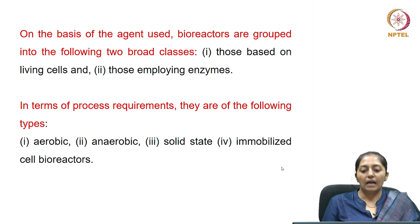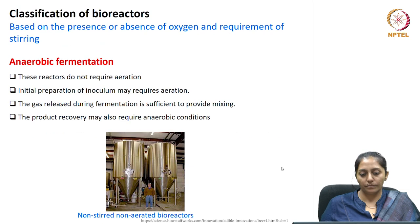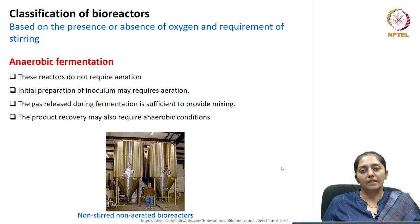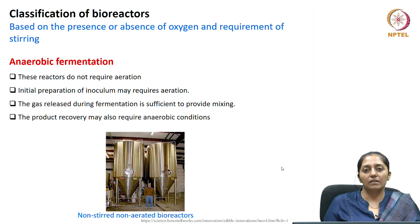Based on the agents or cells used, reactors can be broadly classed into those based on living cells and those based on cellular components such as enzymes. In terms of process requirements, they can be classed as aerobic, anaerobic, solid state, or immobilized cell bioreactors. In anaerobic fermentations, reactors do not need large aeration — initial inoculum preparation may require little aeration but production does not, and the gas released during fermentation is sufficient to create adequate mixing.